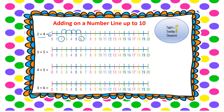Our next question is 3 add 5. We start on that first number, 3, and jump on 5 spaces: 1, 2, 3, 4, 5. The number we've landed on gives us 3 add 5 equals 8. Next question: 4 add 5. Start with the number 4, jump on 5 spaces: 1, 2, 3, 4, 5. The number we've landed on is 9, so 4 add 5 equals 9.